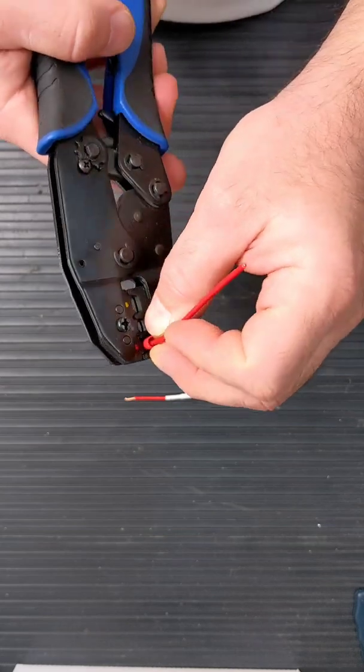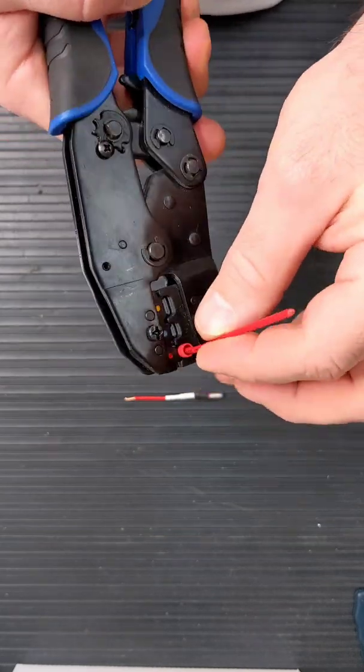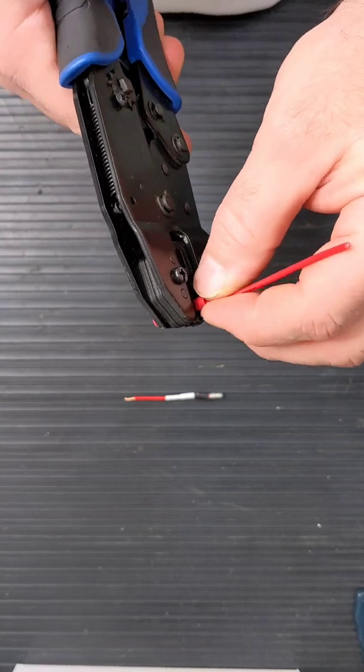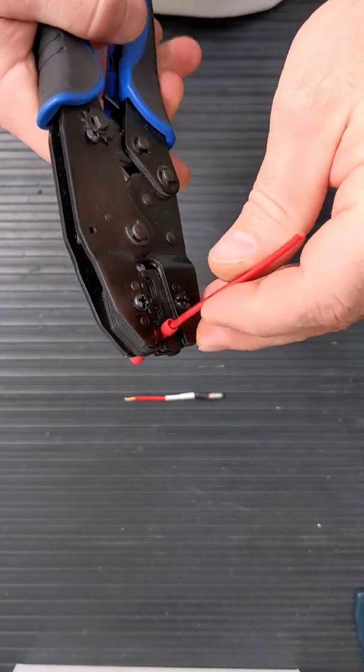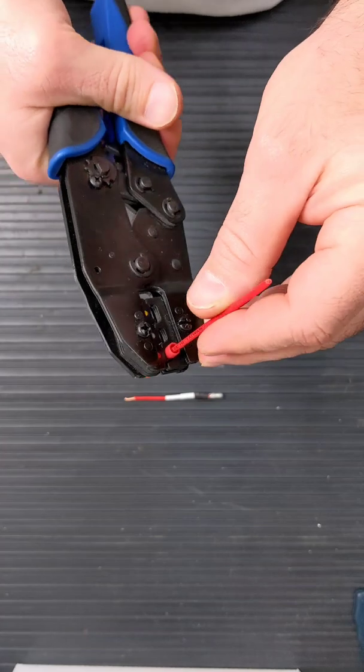Now the outer casing here is plastic, so you don't want to crimp the plastic. You want to keep it in until it stops and that's where the metal will be to crimp. So then just go ahead and crimp.